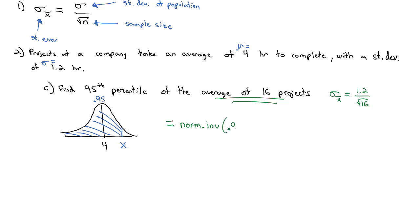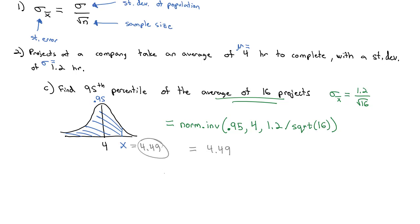We put the area we want to the left, which is 0.95. The mean is 4. For the standard deviation, it's replaced with the standard error: we type 1.2 / SQRT(16). When you type that into Excel, you get 4.49 as the 95th percentile. In other words, 95% of samples with 16 projects will have an average less than 4.49.